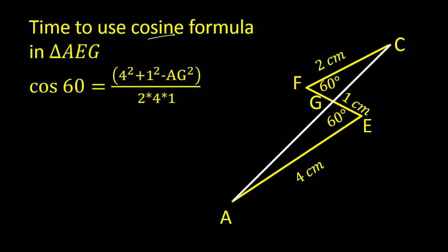Now it is time to use cosine formula in triangle AEG. Since we have 4 cm and 1 cm, this is 60 degrees. So by cosine formula, cos 60 equals 4 squared plus 1 squared minus AG squared over 2 times 4 times 1. So this value is root 13.